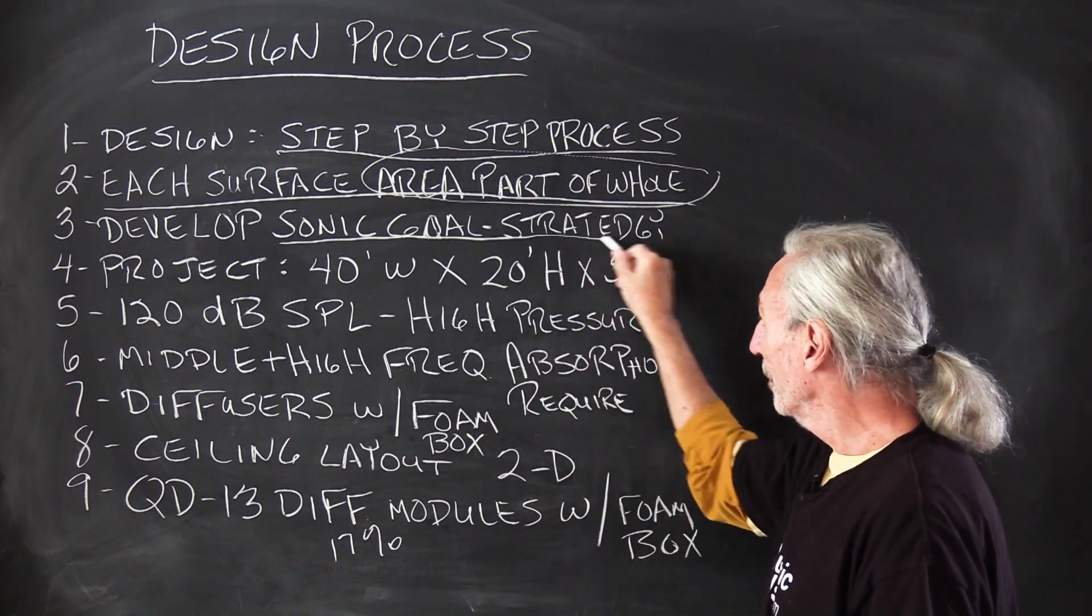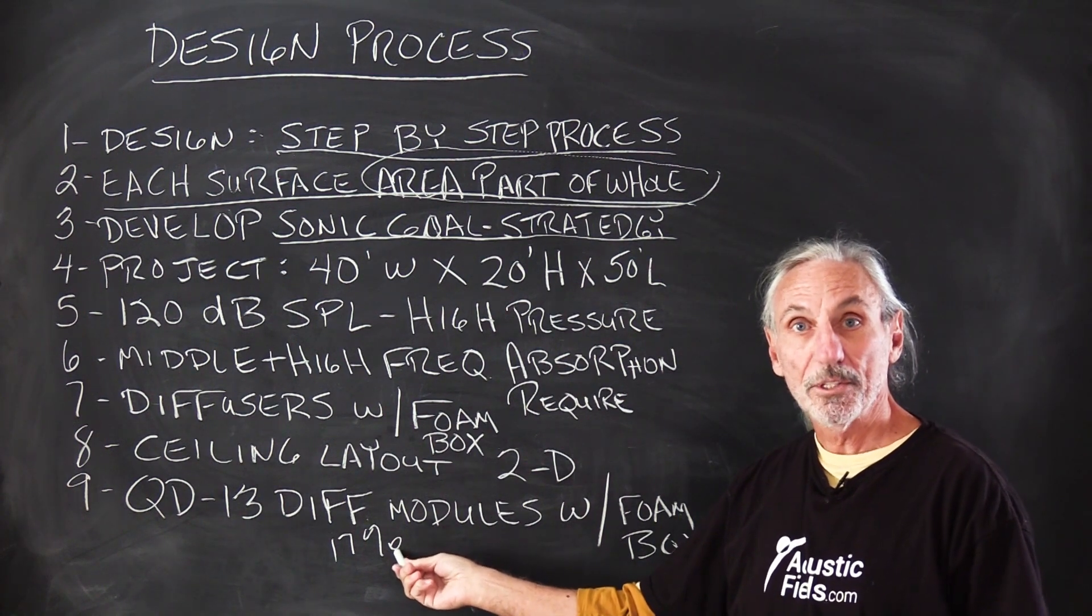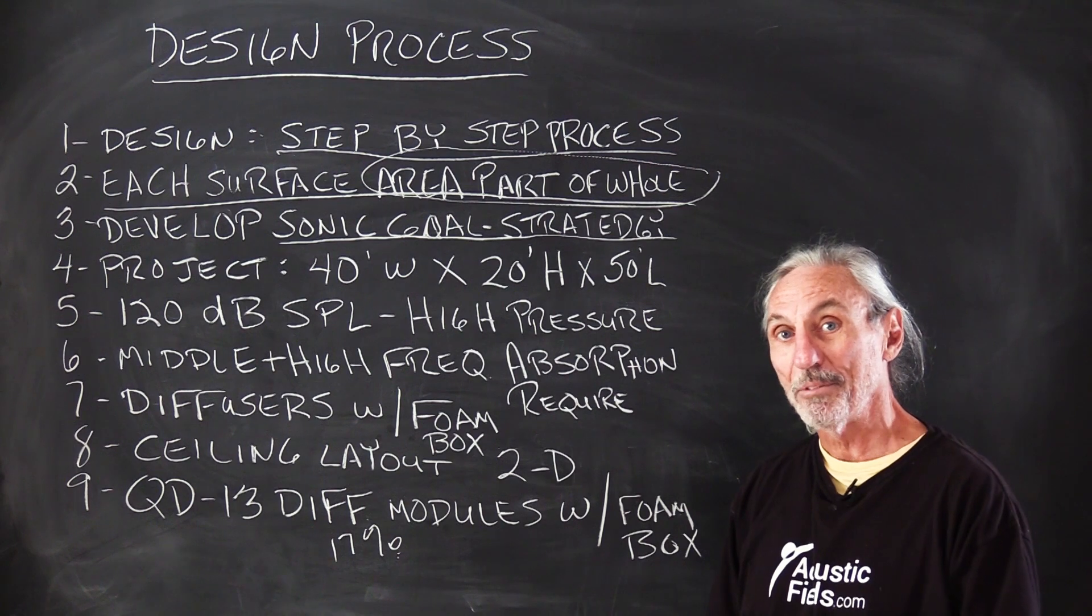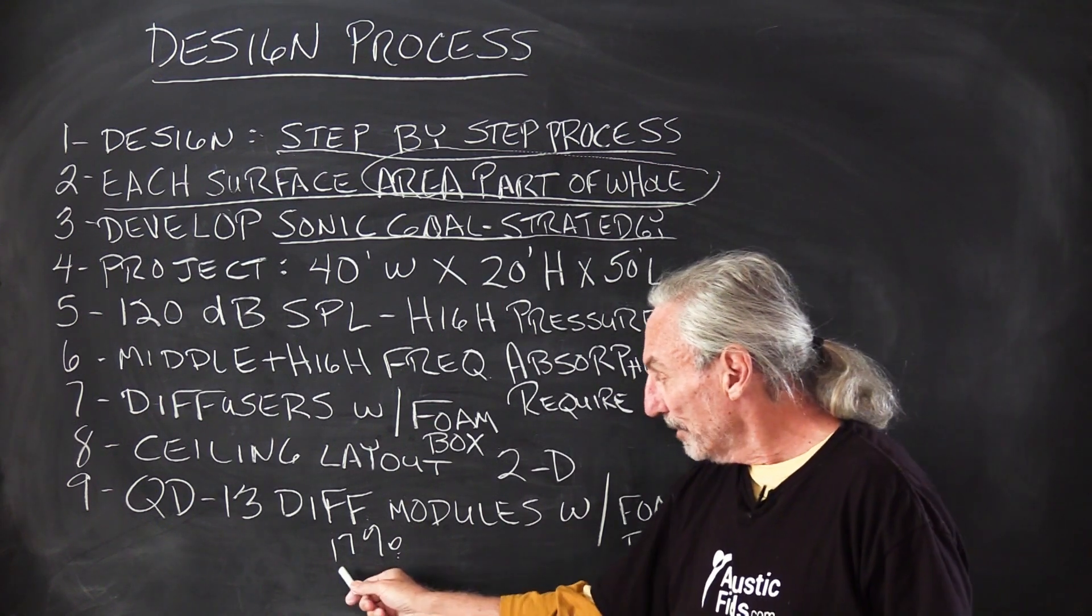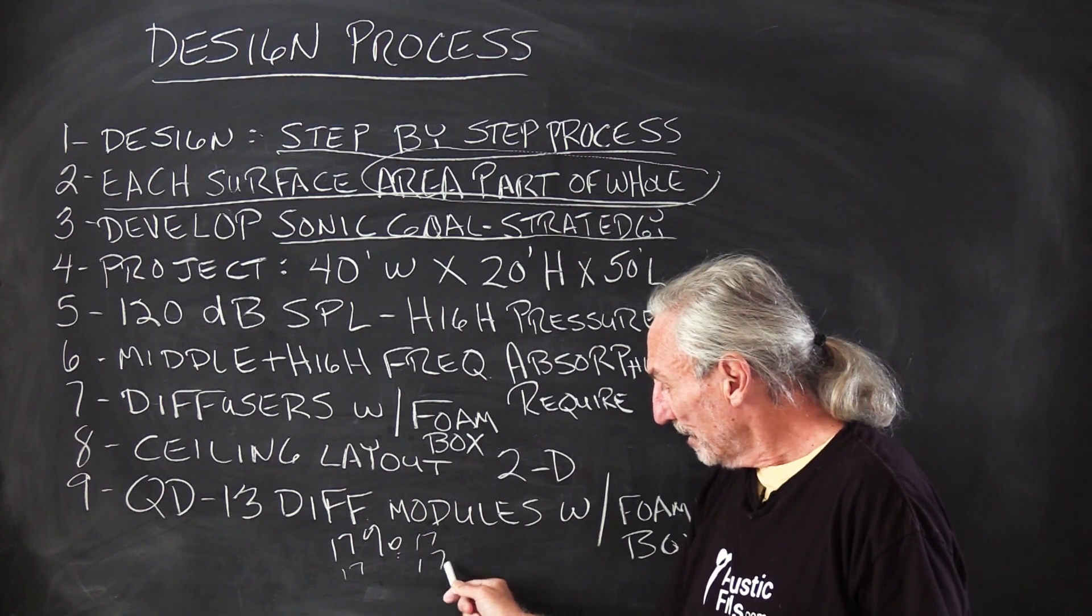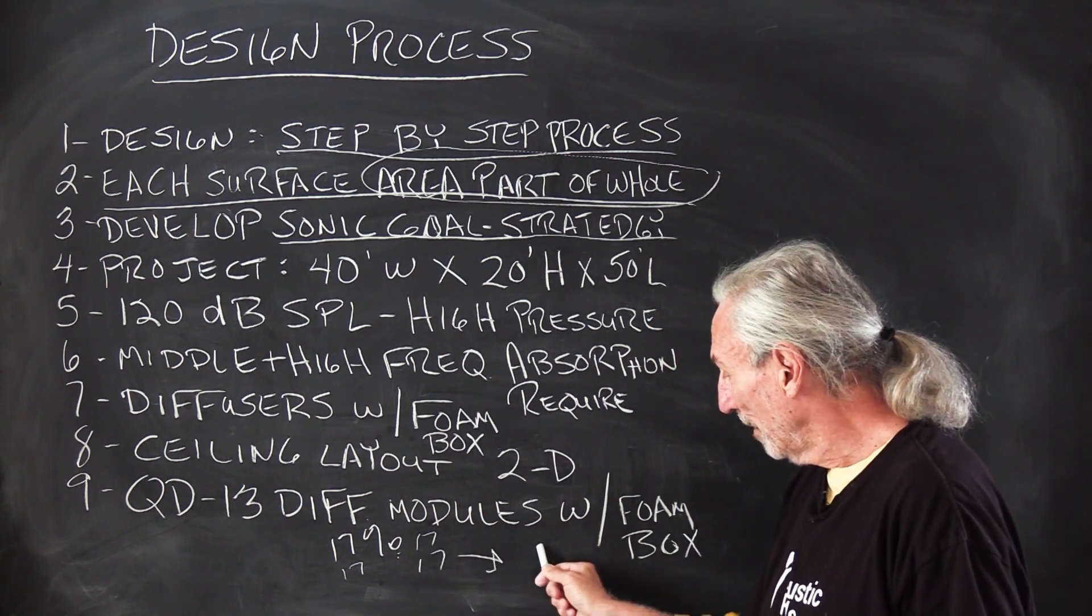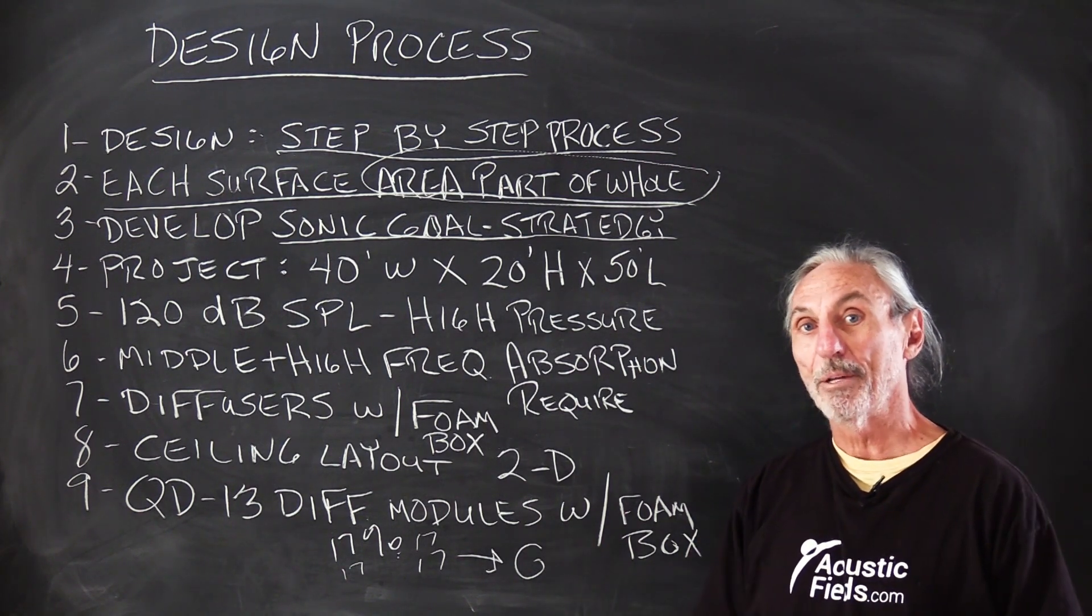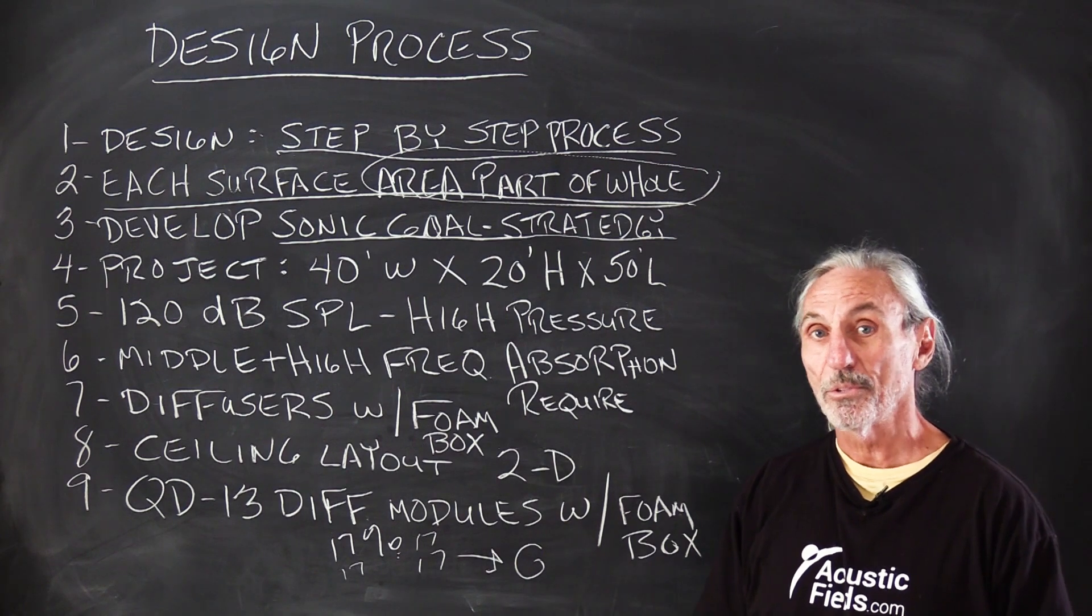So we're going to develop a 100% strategy using surfaces, where each surface area only contributes 17%. So what do we got to do? We got to add all those up to get to our goal, and we can do it. Then we have to match usage to the sonic goal or sonic goal to the usage.